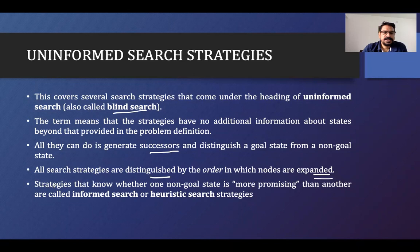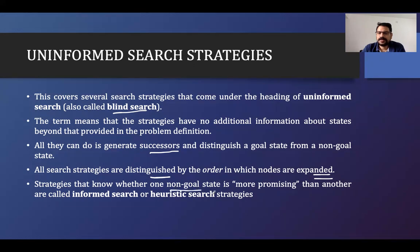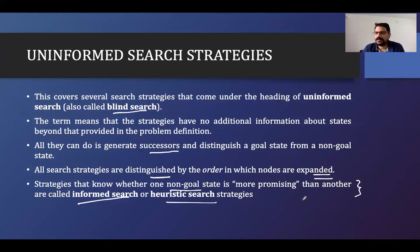Strategies that know whether one non-goal state is more promising than another are called informed search or heuristic search algorithms. In informed search, we get more information so we can determine whether a particular non-goal state is worth exploring or not. This additional information helps make that decision — that is what informed search, also called heuristic search, provides. We'll cover this later; first we'll look at uninformed search.